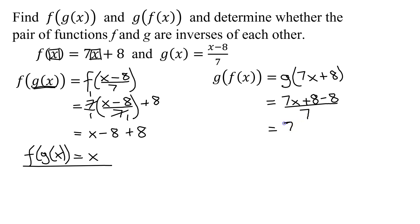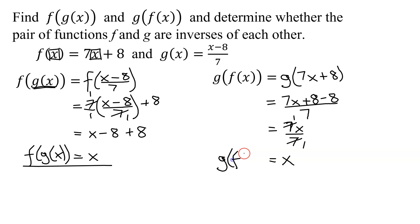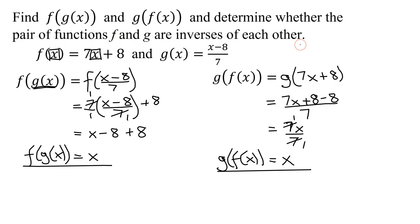So simplifying this, the plus 8 and minus 8 cancel to 0, and I get 7x over 7. The 7s cancel, so g of f of x is equal to x. So I've figured out f of g of x, and I know what g of f of x is. Now we need to determine whether the pair of functions f and g are inverses of each other.